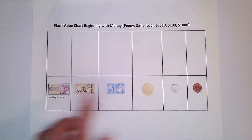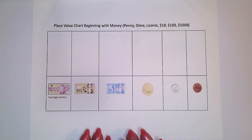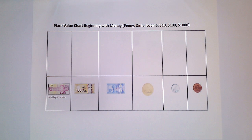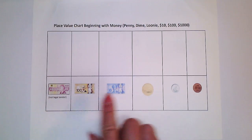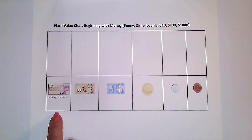Once I've got this mastered, it's easy for me to bring out the base 10 blocks. When you do, once the students have done lots of work with this, when you put the unit down they'll say 'that's a loonie' — you don't tell them that, they'll tell you. They'll say that rod is a ten dollar bill. They ignore the decimals altogether because they've already made the connection that the flat is their hundred dollars and the cube is their thousand dollar bill.